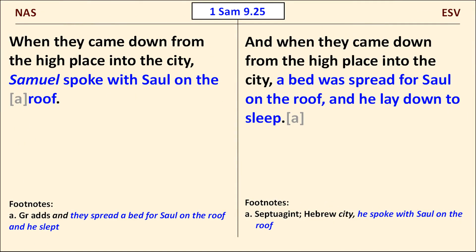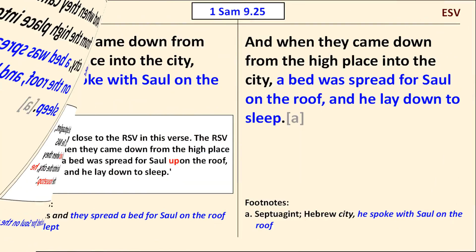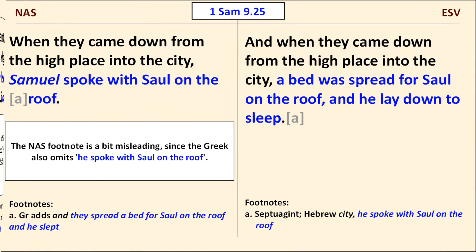The next example is from 1 Samuel 9:25. Did Samuel speak with Saul on the roof, or did Saul sleep there in a bed prepared for him? The ESV follows the Septuagint here, while the NAS, as usual, follows the Masoretic text. The NAS modernized the ASV a bit, replacing 'communed with' with 'spoke to.' The ESV is even closer to the RSV, replacing only 'upon' with 'on.' In passing, I note that the NAS footnote is misleading as written, since it indicates what the Greek adds but fails to state what the Greek omits.